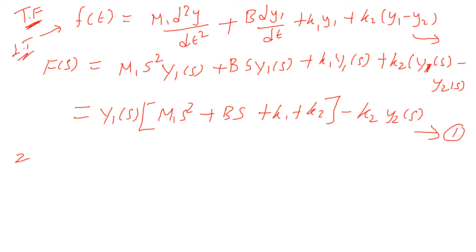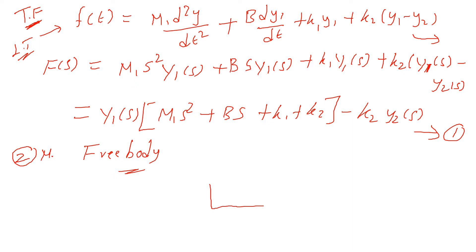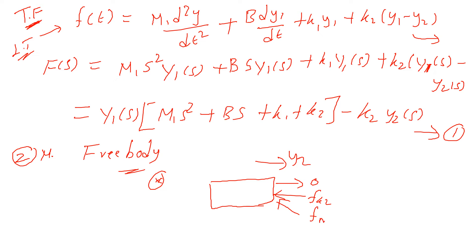This mechanical system has a second mass. Let us draw the free body diagram of the second mass. For the second mass, the external force is zero - no force is directly applied to M2. The internal force is experienced due to the force through body M1. M1 and M2 are attached through K2, so it generates an internal force on body two. Therefore Fk2 equals Fm2.